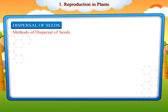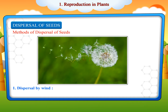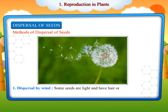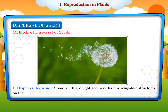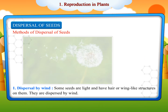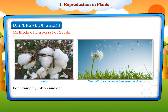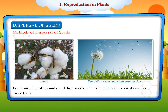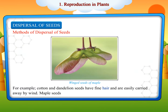Methods of Dispersal of Seeds. Dispersal by Wind: Some seeds are light and have hair or wing-like structures on them. They are dispersed by wind. For example, cotton and dandelion seeds have fine hair and are easily carried away by wind. Maple seeds have wings.